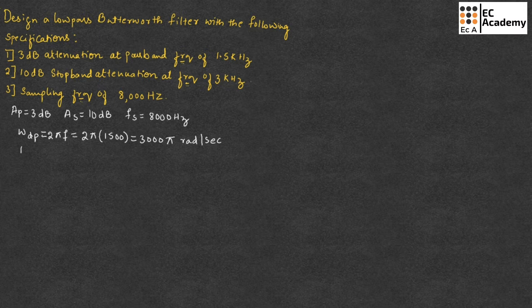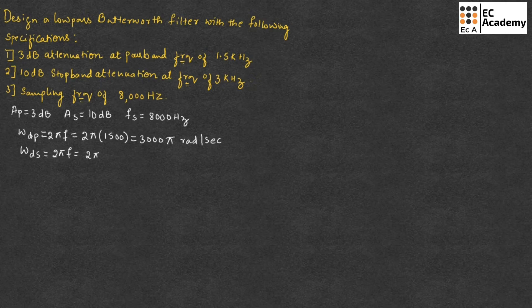Now let us calculate Omega_dS, which is for the stopband frequency. We can write that as 2*pi*f, where f is 3 kHz, so it is 2*pi into 3000, which gives us 6000*pi radians per second.